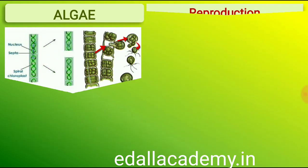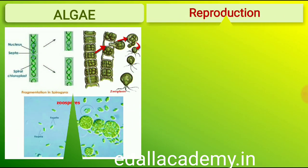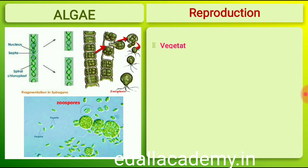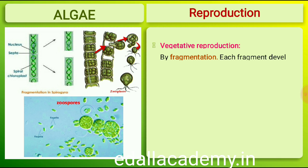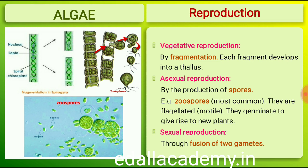Algae reproduce by vegetative, asexual and sexual methods. Vegetative reproduction is by fragmentation; each fragment develops into a thallus. Asexual reproduction is by the production of different types of spores, the most common being the zoospores.